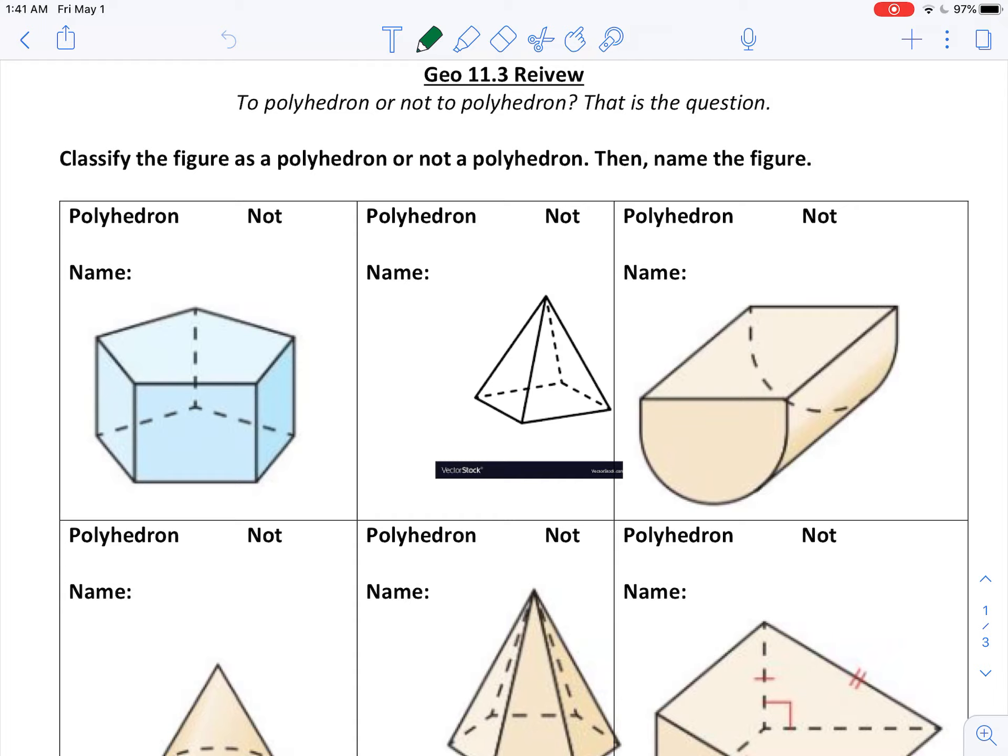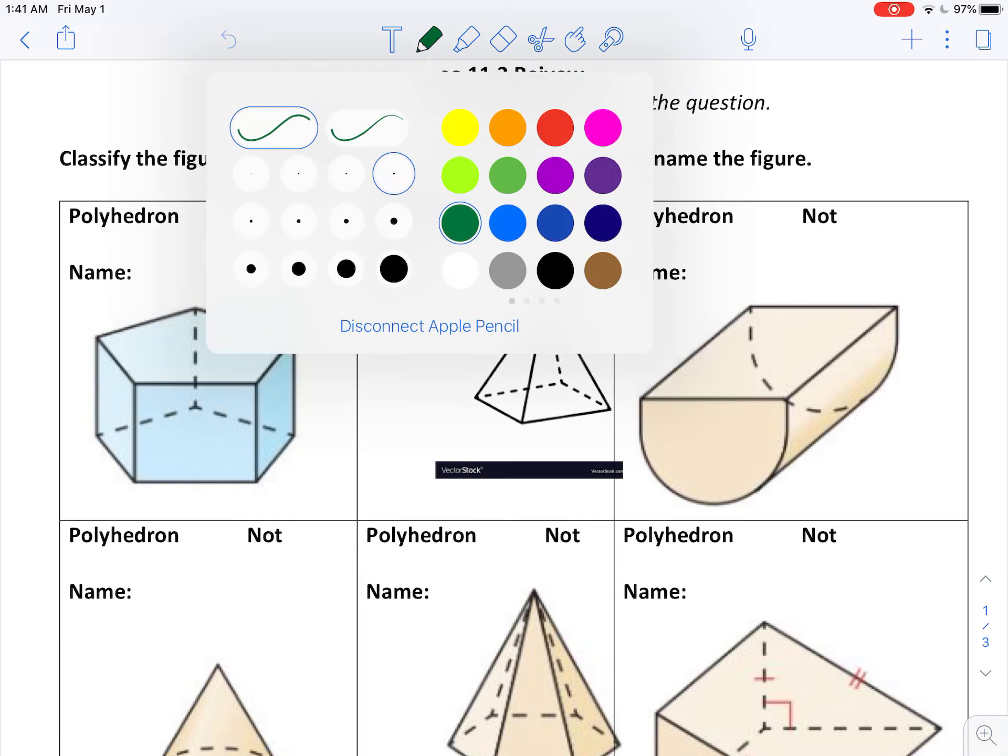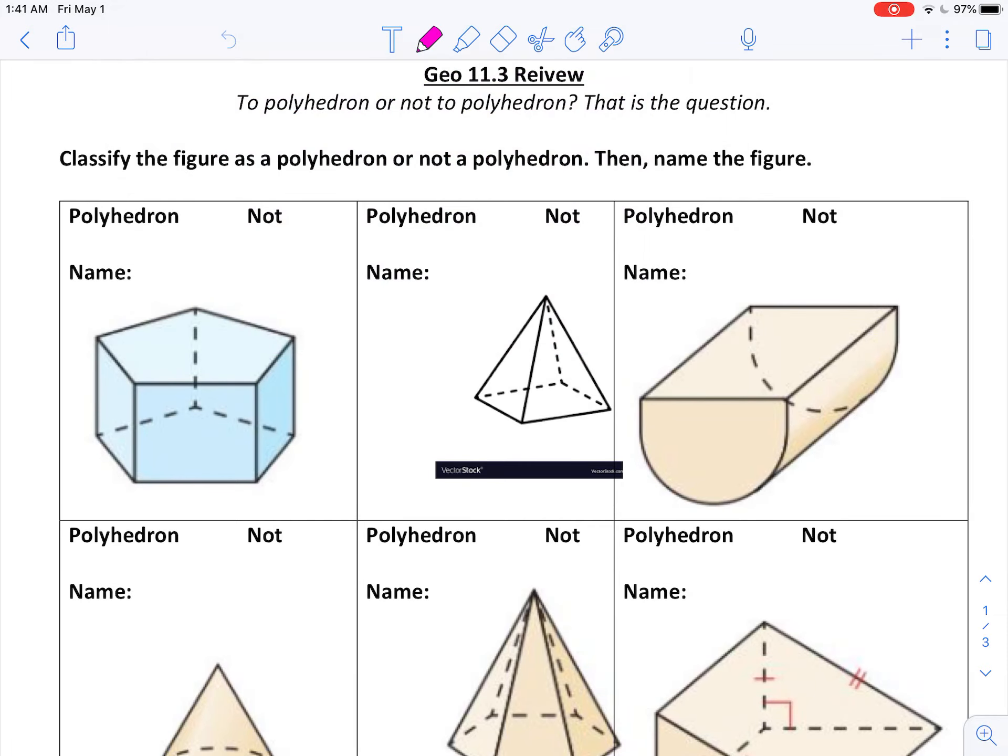So you are going to need to know how to find the area of a regular polygon again. So we are going to need to know that one half apothem perimeter.